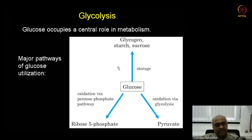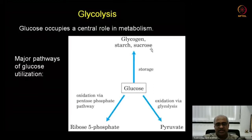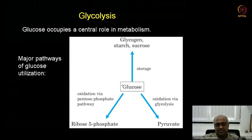Let us look at what can happen to glucose. Glucose may be joined with multiple glucose molecules to make starch or glycogen, or isomerized into fructose to form sucrose — the glucose-fructose disaccharide that sugarcane stores in its stem. Starch is stored in grains, glycogen in our liver. This is one thing that can happen to dietary glucose or glucose produced by photosynthesis.